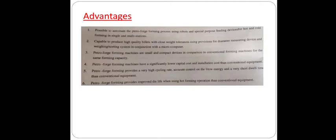Fourth, petroforge forming machines have significantly lower capital cost and installation cost than conventional equipment. Fifth, petroforge forming provides a very high cycling rate, accurate control on blow energy, and very short dwell time. The last advantage is that petroforge forming provides improved die life when using hot forming operations compared to conventional equipment.